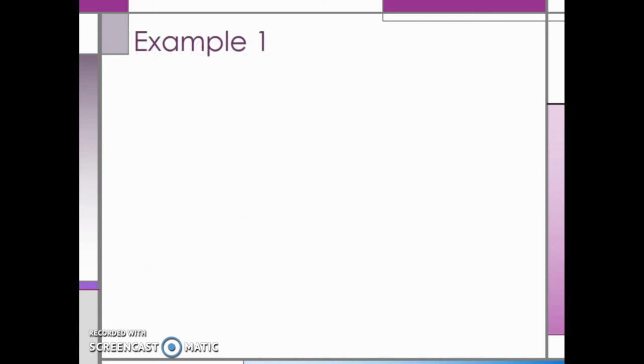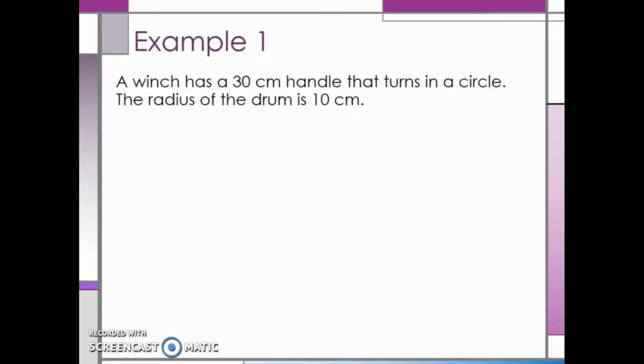Let's take a look at one example. A winch has a 30 centimeter handle that turns in a circle. The radius of the drum is 10 centimeters. First, what is the mechanical advantage of the winch?